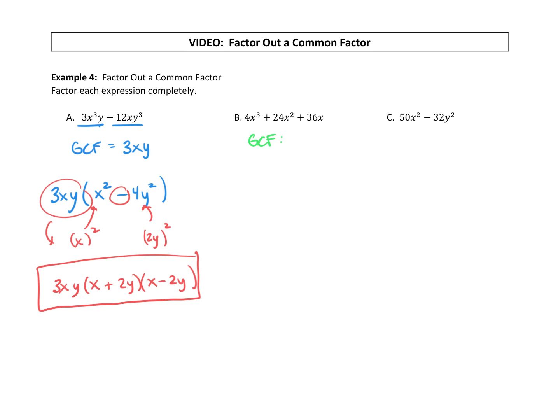So coefficients, we have a 4, 24, and 36. The smallest one, 4, does fit into the other two. So 4 is in our GCF. And all three terms have x's. The most x's they have in common is an x to the first power.